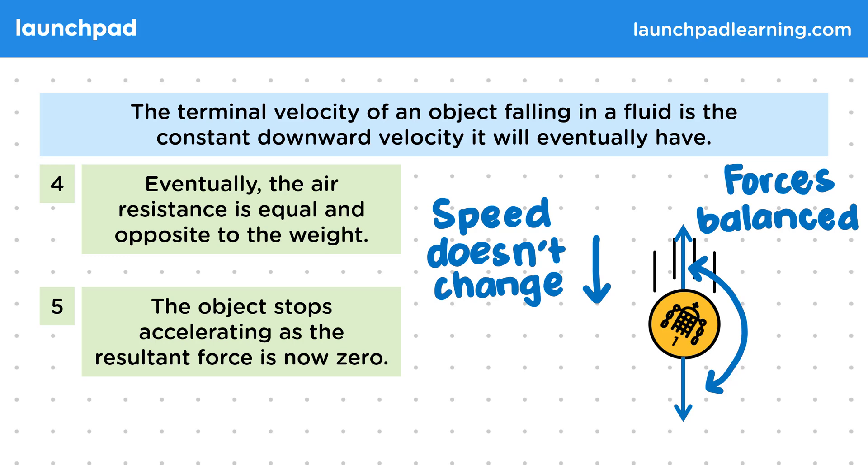And because the speed isn't changing, the air resistance isn't changing, so our two forces stay balanced. This constant speed that the coin has reached, which keeps the air resistance and the weight balanced, is called its terminal velocity.